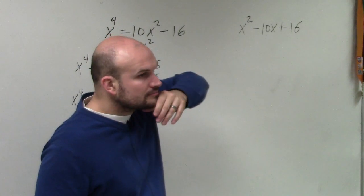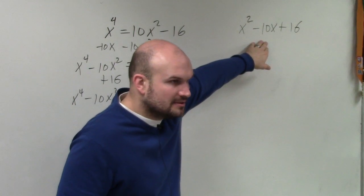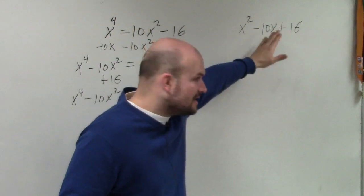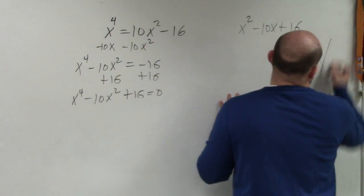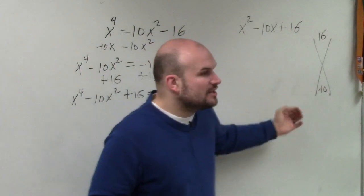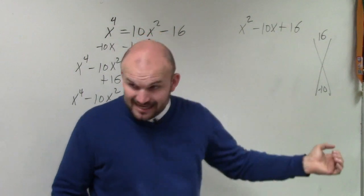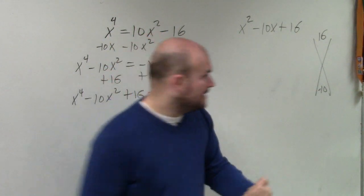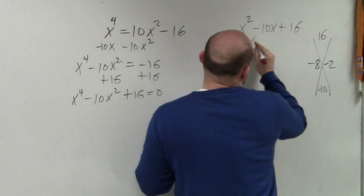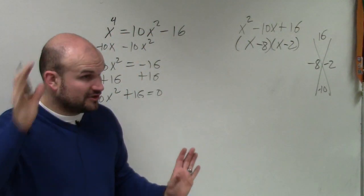This is how I know how to factor. Do you know how to factor a quadratic? So let's factor it. 16, negative 10. What two numbers multiply to give you positive 16, add to give you negative 10? Negative 8 and negative 2. So this is (x - 8)(x - 2).